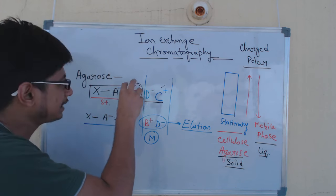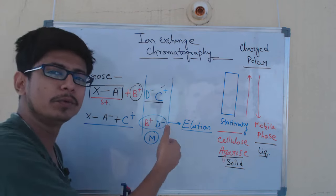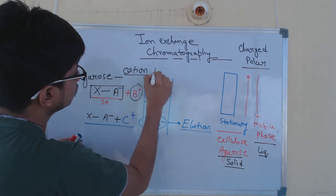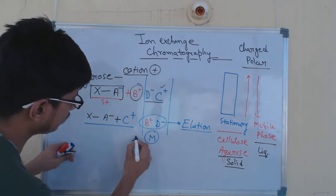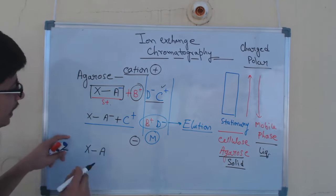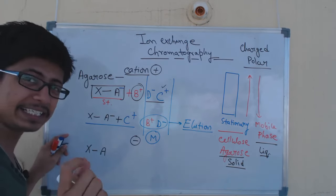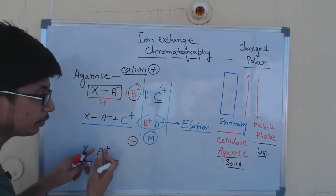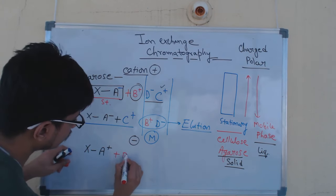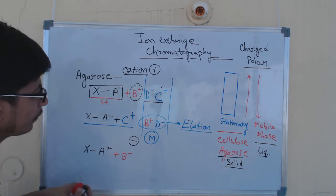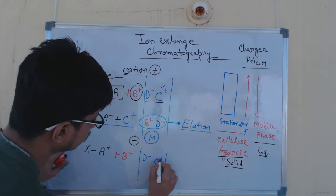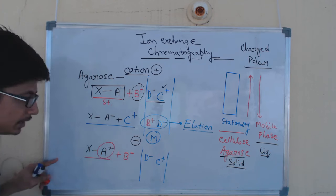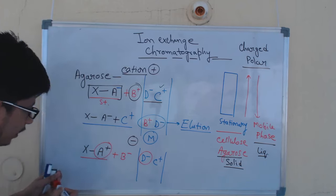The ion exchange means there is an ion present on the stationary phase, and we exchange that attached ion for another ion that is in the mobile phase. In cation exchange, positively charged ions are retained. For anion exchange chromatography, the resin — the solid phase present in the column — will contain positively charged molecules instead of negative, because it needs to bind with anions. It also has a negatively charged ion initially attached to it. In the mobile phase, the same D− and C+ are present.